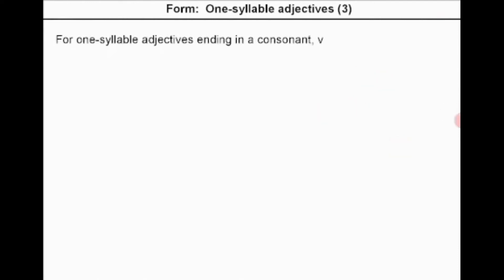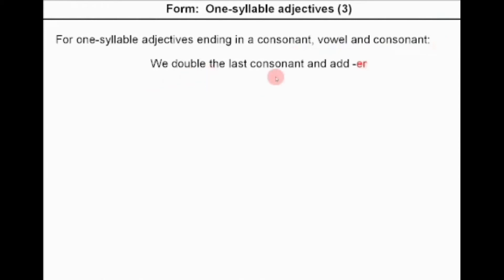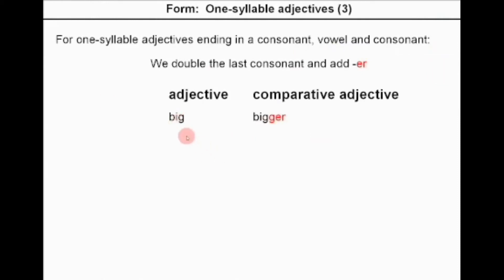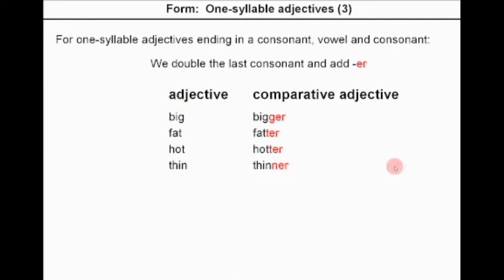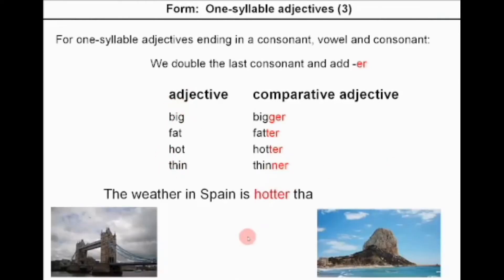For one-syllable adjectives ending in a consonant-vowel-consonant pattern, we double the last consonant and add ER. For example: big → bigger. Because the last letters are consonant-vowel-consonant, we add ER and the consonant is doubled. Fat → fatter, hot → hotter, thin → thinner. Example: the weather in Spain is hotter than England.